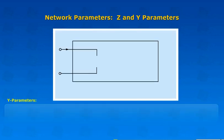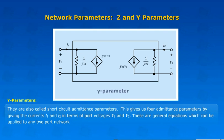Y Parameters are also called Short Circuit Admittance Parameters. This gives four admittance parameters by giving the currents I1 and I2 in terms of port voltages V1 and V2.